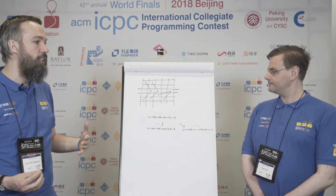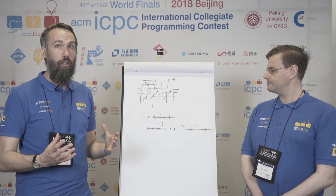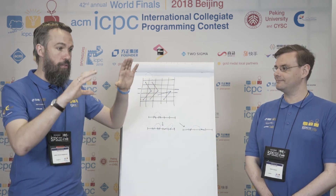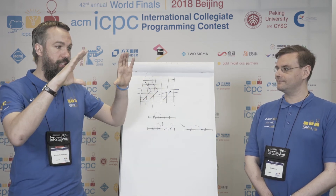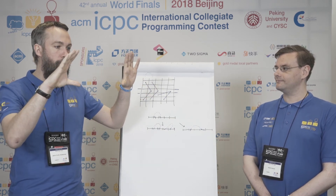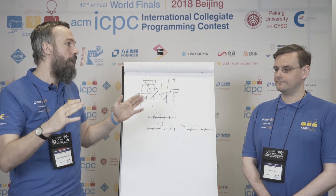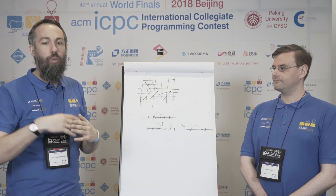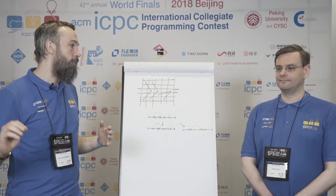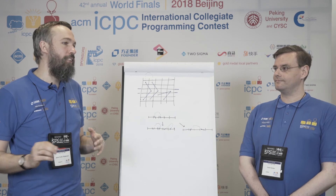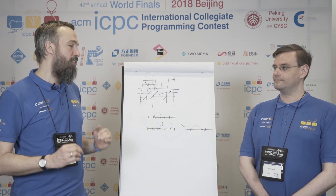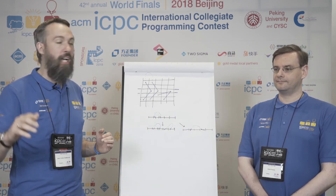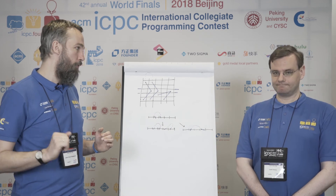So this suggests that the answer in general will be: we calculate for a small number of steps, and then for n equal 8, if we want the answer for, say, 10 to the 15th, we take the answer for, say, 100, and then add (10 to the 15th minus 100) over 2, times 12.